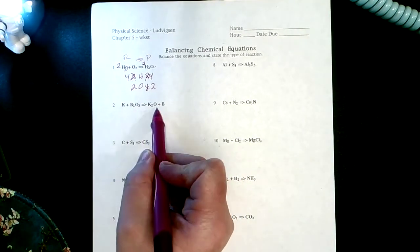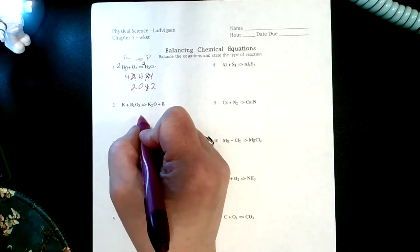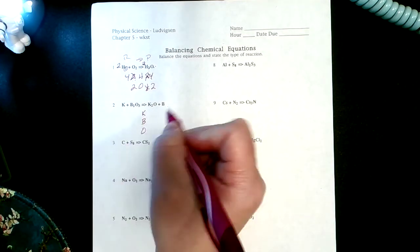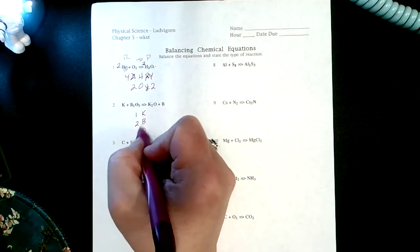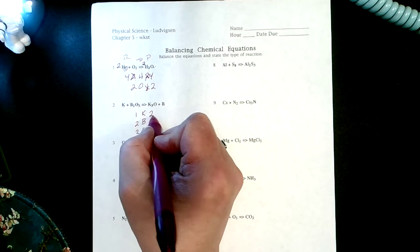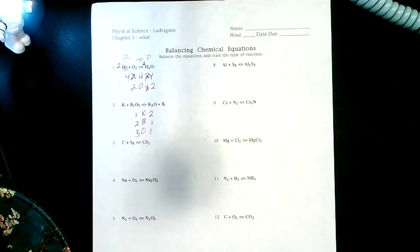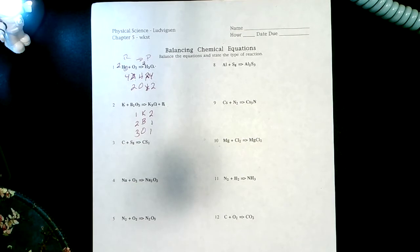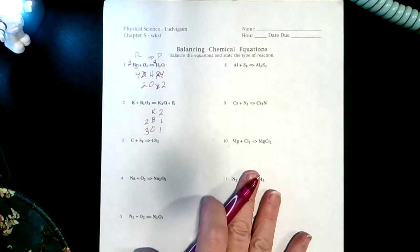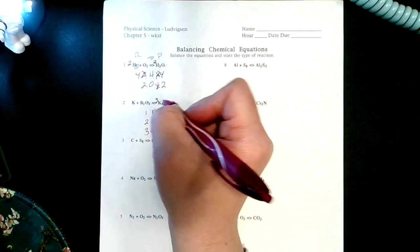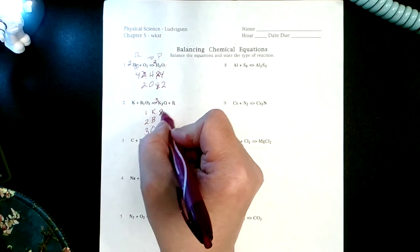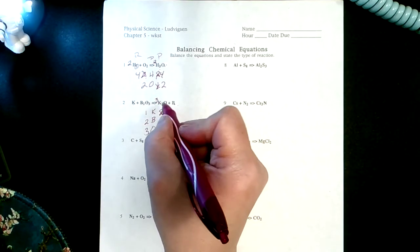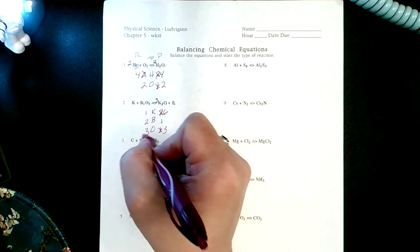I've got potassium, boron, I've got one K, two B's, three O's. I've got two K's, one O, and one B. My oxygens definitely have to be fixed and so do my B's. Usually we don't do odds, but let's try putting a three there. I now have three times two is six K's, three times one is three oxygens. My oxygens are now okay.